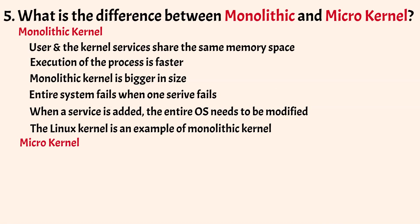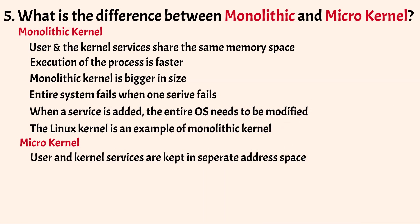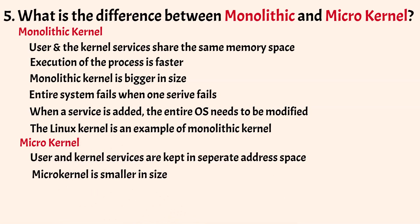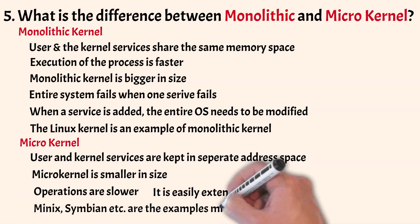In a micro-kernel, user services are kept in user address space and kernel services are kept in kernel address space. This reduces the size of the kernel. Since user services share a different memory space with the kernel, operations are slower compared to monolithic kernels. Micro-kernels are easily extendable and don't require modification in kernel space when a new service is added to user space. Micro-kernels are very uncommon; Minix and Symbian are examples.